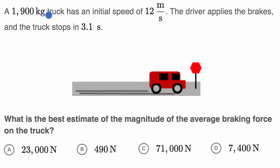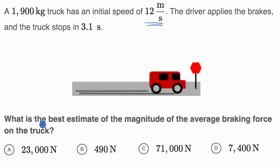A 1900 kilogram truck has an initial speed of 12 meters per second. The driver applies the brakes and the truck stops in 3.1 seconds. What is the best estimate of the magnitude of the average braking force on the truck?